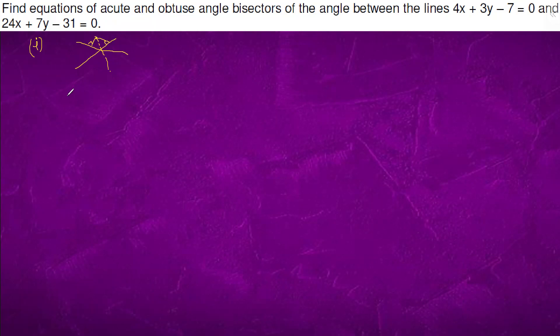So, that is what we are trying to do. The distance of this point is x comma y. So the distance of this point from this line and this line are equal.